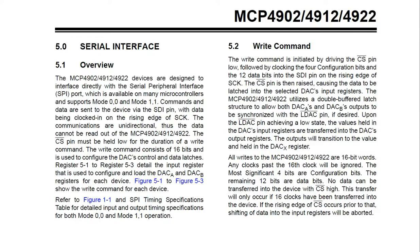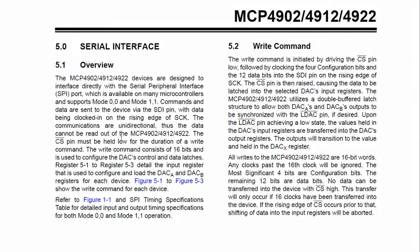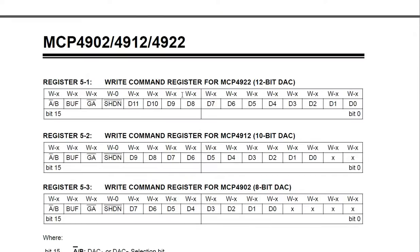Going back to the datasheet, let's take a look at the serial interface section. As we can see, this chip accepts SPI mode 0,0 which is the default for the Arduino. We can also find the maximum serial clock frequency further up on page 7 of the datasheet. As you can see, it's 20 MHz, and the Arduino defaults to 4 MHz, so we are well within that frequency range. We'll have a look at some more serial communication details.